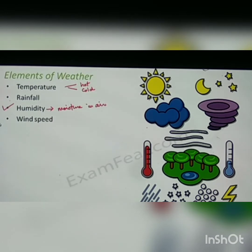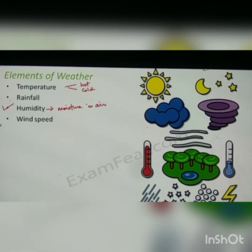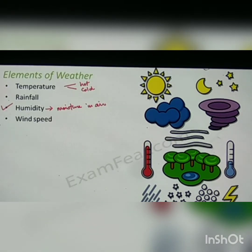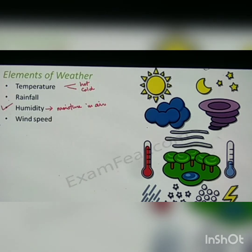The next element is wind speed. Have you ever seen a storm, or winds blowing after a thunderstorm or rainfall? Wind speed also defines the weather. If it is very windy, you may not feel comfortable — if the wind is so strong it's taking you away, that is not comfortable. Wind speed tells us about the weather and indicates changes in the atmosphere.